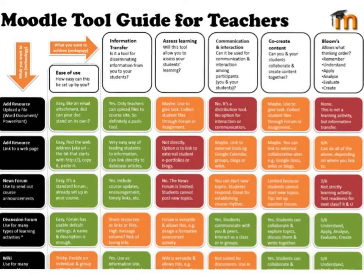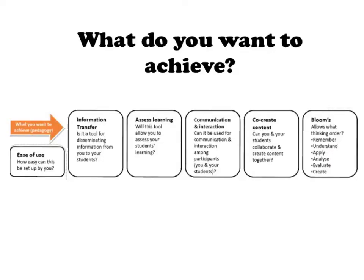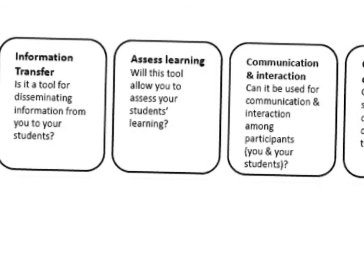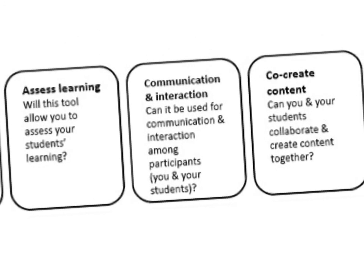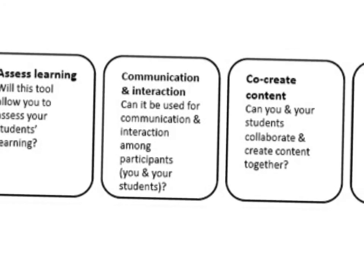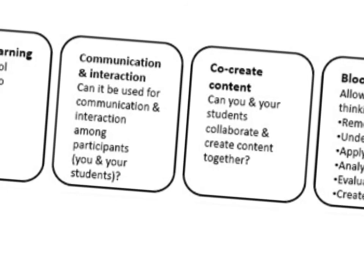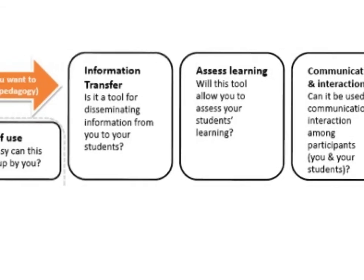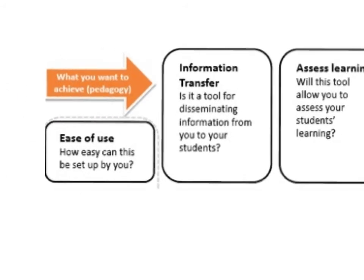It's called the Moodle Tool Guide for Teachers. Across the top of the matrix, someone is asked: what is it that you want to achieve? What are you trying to build in your course site? Do you want to do something around information transfer — disseminating information to your students? Is it around assessing learning? Is it around communication and interaction? Or is it around co-creating content — allowing you and your students to collaborate and create content together? The last column is really around Bloom's taxonomy, giving an indication of whether a tool allows you to work across all six levels or only touch one, two, or three. And the very first column is more of an indication of how easy that tool will actually be to set up, because you always have to work within your own technological limitations.